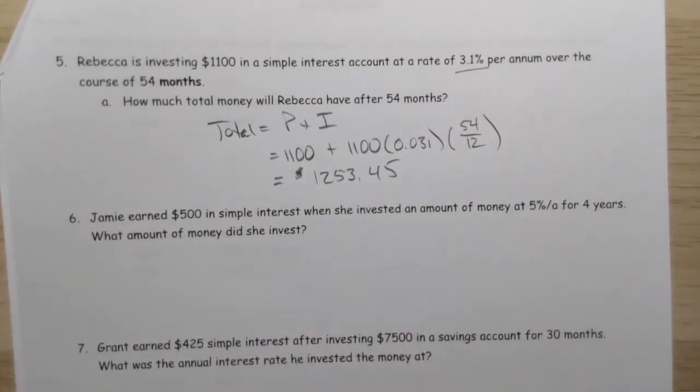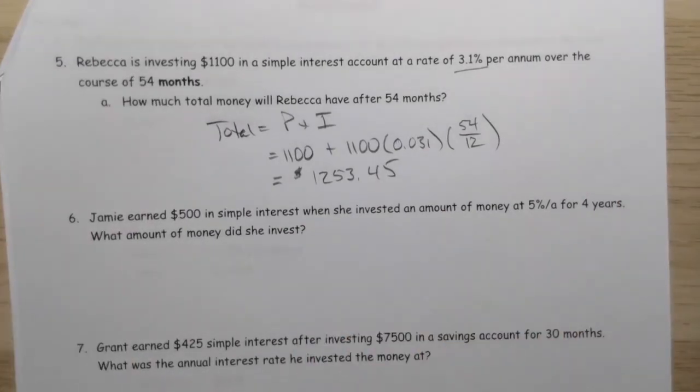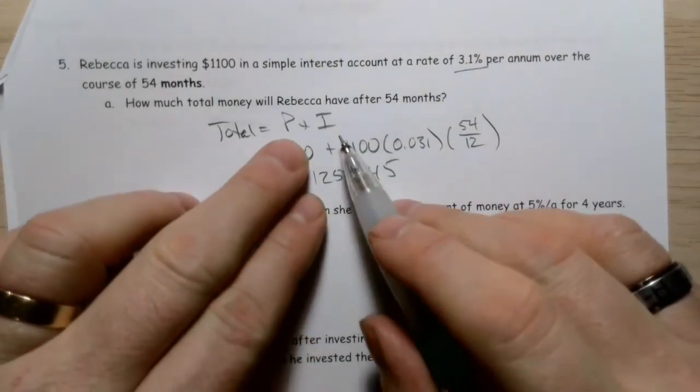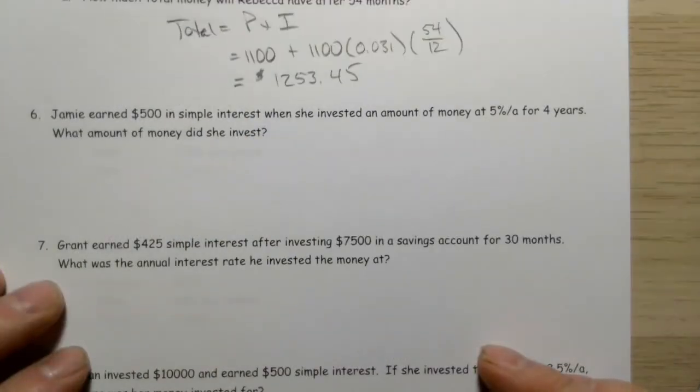Now we can do the total in just one step. Just enter that all into your calculator and it'll give you the whole thing without having to do the interest first and then add the principal.